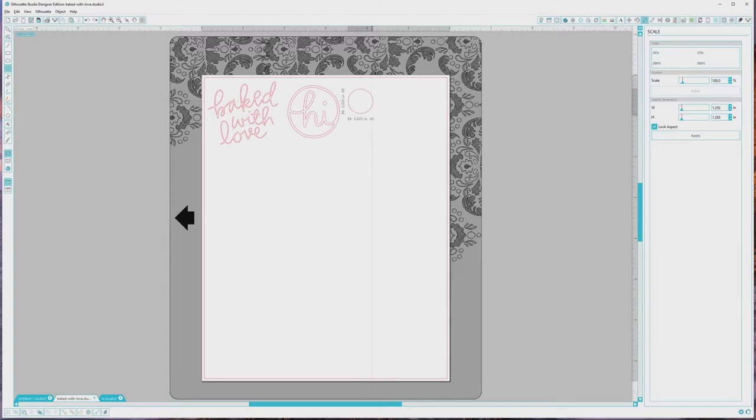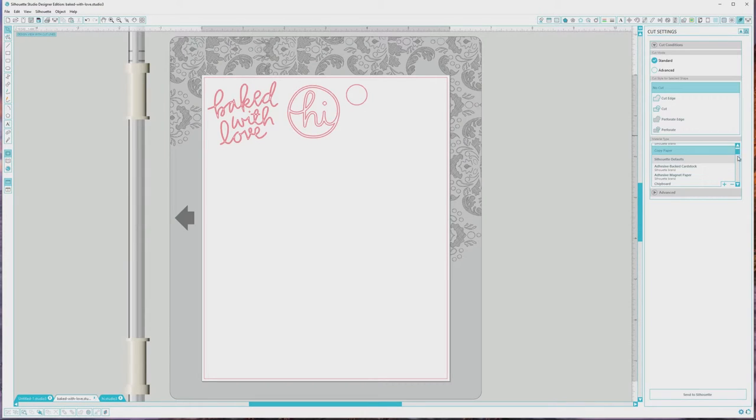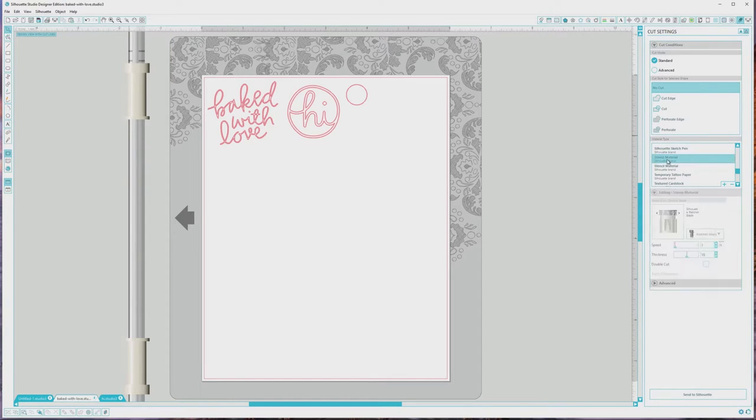For the final example I'm just going to make a simple circle to see how that cuts from the stamp material. I'll resize it to half an inch since it's a simple shape. Now I'm ready to cut my example shapes and I'll open the cut settings window from the top right menu and choose stamp material from the material type area. I'll change my blade to 9 and cut the shapes and I'll see you on the flip side.